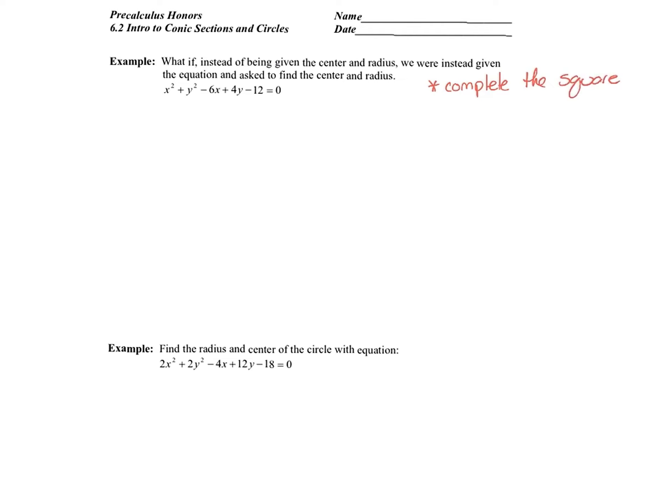In Algebra 2, you completed the square for parabolas to convert from standard form to vertex form — this is very similar. The difference is that here I have to complete the square twice, because we have both an x² term and a y² term. To complete the square, gather all terms with x, leave a space, then gather all terms with y, leave a space, and move the constant to the other side.